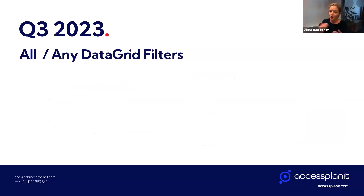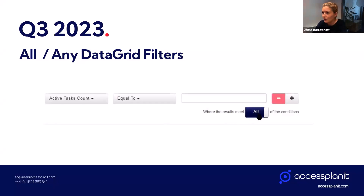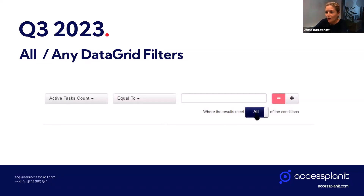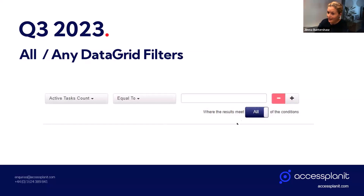The final feature in our 'coming very soon' segment is the all-or-any data grid filters. There'll be a little toggle option available in those data grid filters. With the new any/all toggle option, you'll basically be able to create new filters where instead of all the criteria needing to be met, any of the criteria can be met for that filter to be applied.